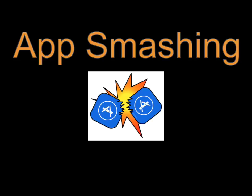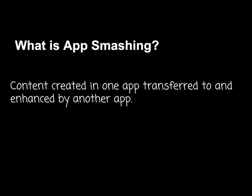The following video is going to describe the app smashing process. App Smashing is the process of using one app to create some work and then moving it into another app, using the functions and features of that app to enhance that original piece of work. So essentially what you're doing is using multiple apps and the functions and features of each of those apps to create one piece of work.